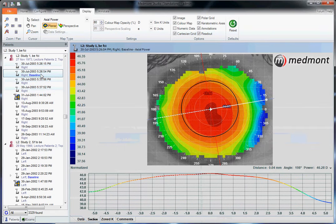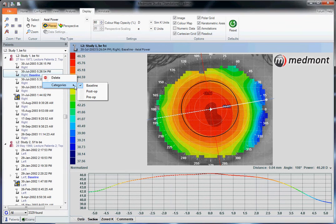In this case we chose the second image and we labeled it baseline by right-clicking, going to categories, and selecting baseline. We highlight this as being the pre-orthokeratology map that we're going to use to compare against all future visits.